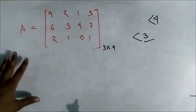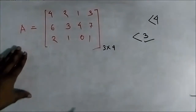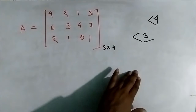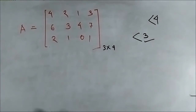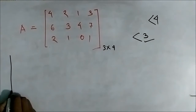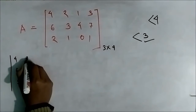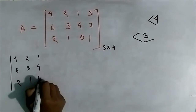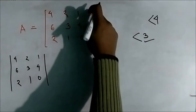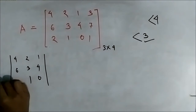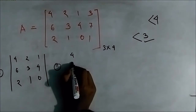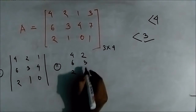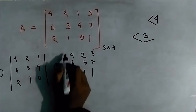Let us check all the square submatrices of order 3. If we find that in any square submatrix of order 3 the determinant is not equal to 0, then we can say the rank is 3. There are four such submatrices. The first square submatrix is: 4, 6, 2 / 2, 3, 1 / 1, 4, 0 — here we have left out the fourth column.